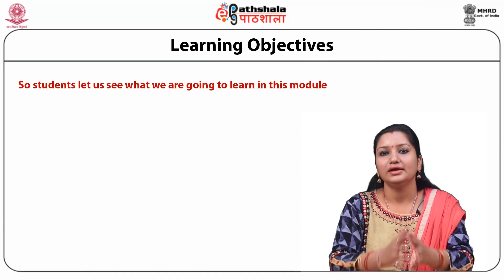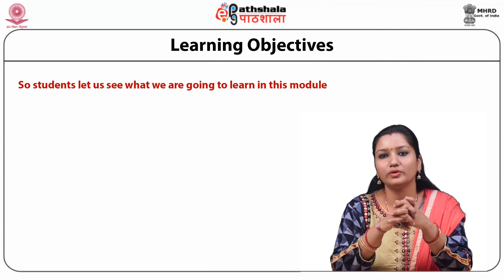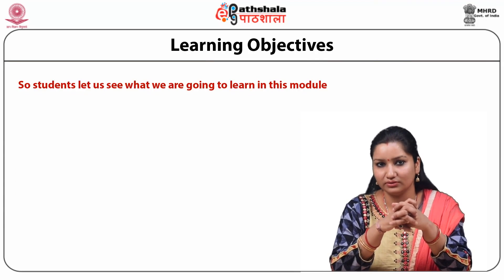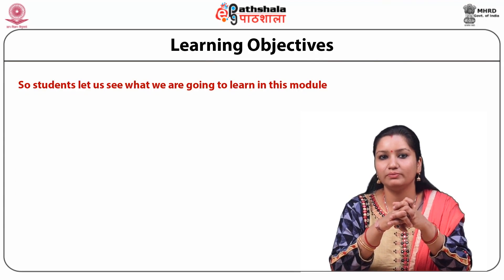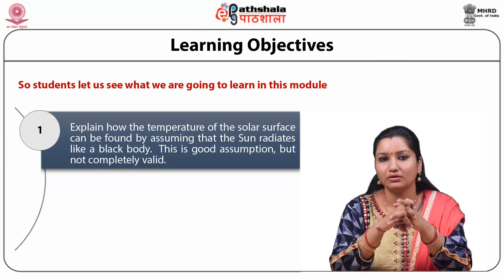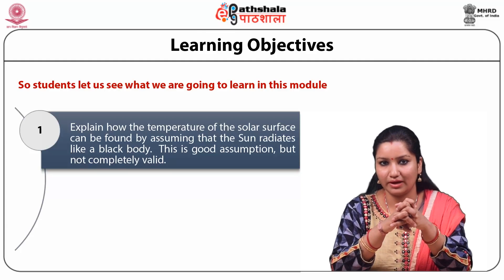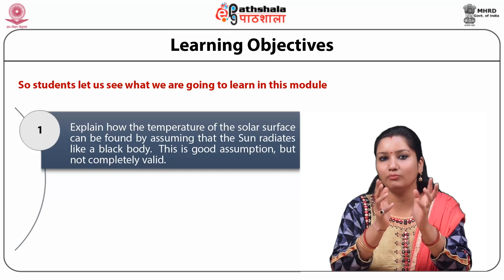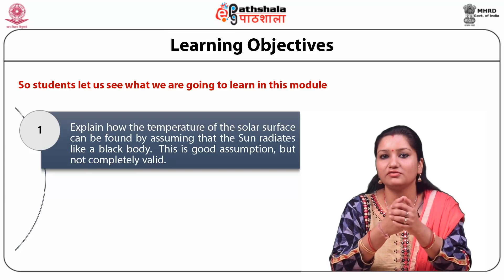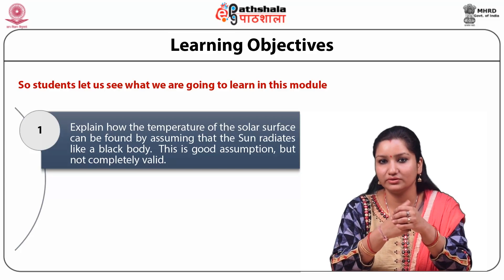Let us see what we are going to learn in this module. First of all, you will be able to explain how the temperature of the solar surface can be found by assuming that the Sun radiates like a black body. This is a good assumption but not completely valid.